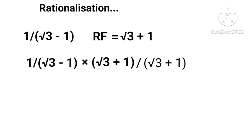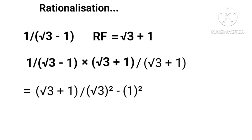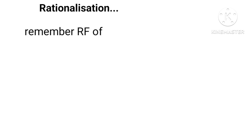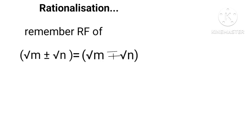For 1 over (√3 − 1), multiplying numerator and denominator by the RF (√3 + 1), we get (√3 + 1) over (√3 squared minus 1 squared), and finally we get (√3 + 1) upon 2. Remember: the rationalization factor of (√m ± √n) equals (√m ∓ √n).